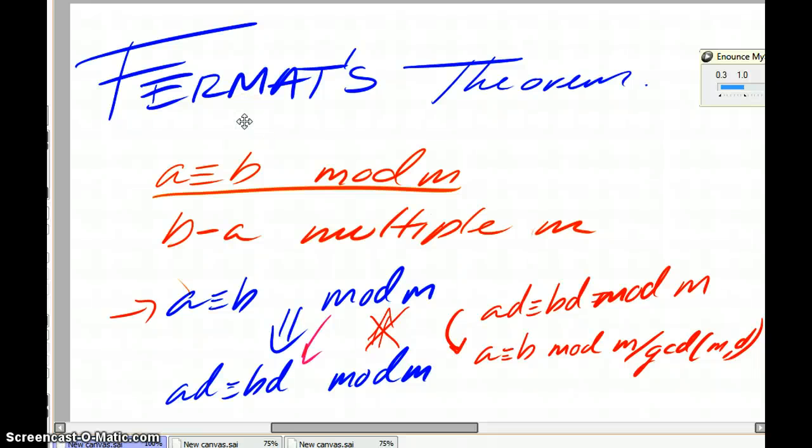Hello, I'm going to do a basic presentation on Fermat's theorem. Now what Fermat's theorem says is that a to the p minus 1 is congruent to 1 mod p for all primes p and all numbers a that are not a multiple of p.